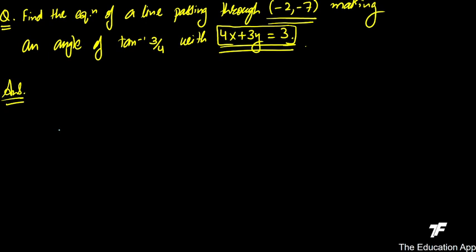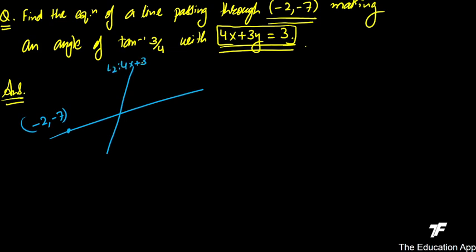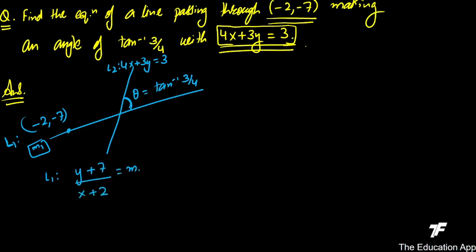This question is similar to the previous one, but has a special point to note. The line L1 (required) passes through (-2,-7), and L2 is 4x + 3y = 3. The angle θ has tan θ = 3/4. Let the slope of L1 be M1. The equation of L1 will be: (y + 7)/(x + 2) = M1. M2 from 4x + 3y = 3 is -4/3.